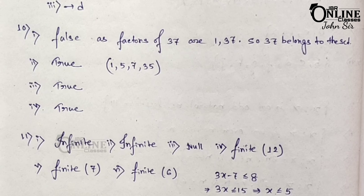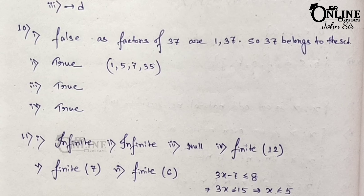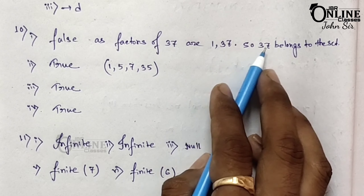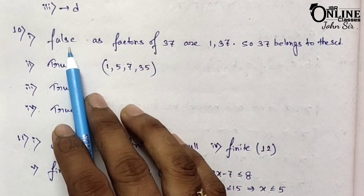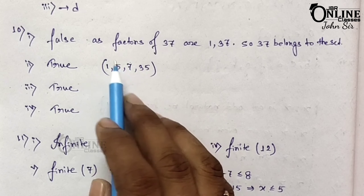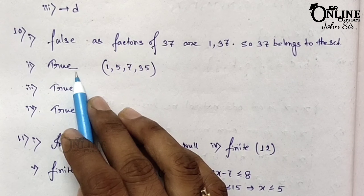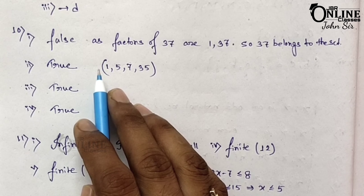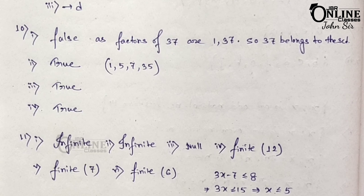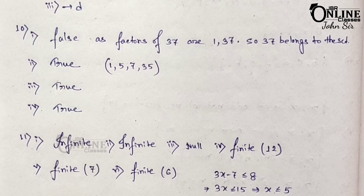Sum number 10: state which of the following statements are true or false. Number 1: 37 does not belong to the set where x has exactly two positive factors. The factors of 37 are 1 and 37 — exactly two positive factors. So 37 does belong to that set, but the statement says it doesn't. So it's a false statement. Number 2: 35 belongs to x such that x has exactly four positive factors. Factors of 35 are 1, 5, 7, and 35 — four positive factors. So the statement is true.